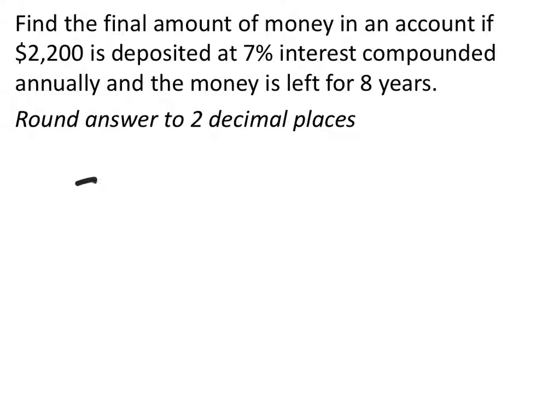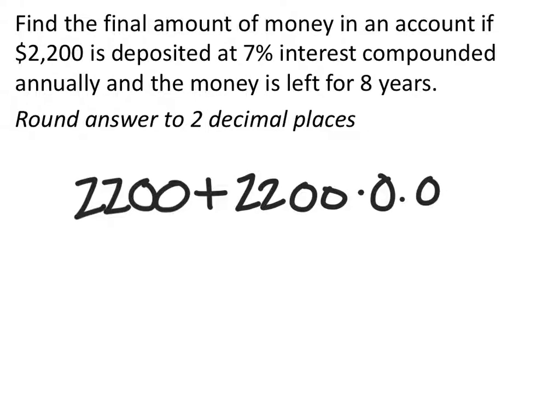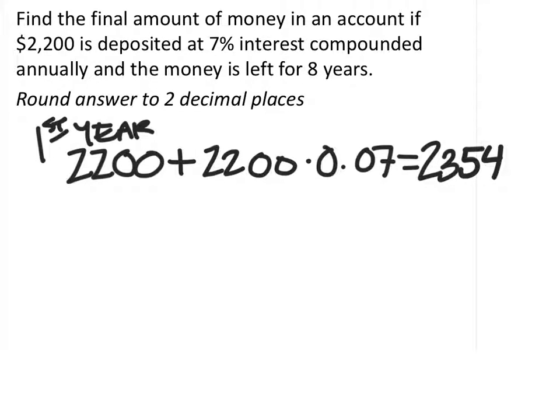Notice what you start out with is $2,200. Then what you're going to do is add 7% to that. So 7% of $2,200, we'll have to multiply that by 0.07 like this. Now what this would do is tell you how much money you have after the first year. And if we plug that in, it should give us the answer, which is $2,354.